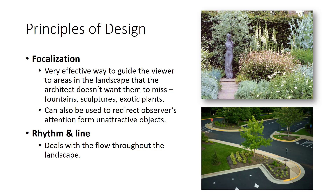Another reason for the use of focalization is to redirect the viewer's attention from an unattractive location in the landscape. Rhythm and line is the landscape design principle that deals with flow throughout the landscape. Different sections in the landscape must be linked to create movement throughout the design. Planting bed shape, bed orientation, and heights and shapes of plant materials and inanimate objects in the landscape have a profound effect on rhythm and line. All parts of the landscape, including the landscape wall, ceiling, and floor, must fit together without being forced.